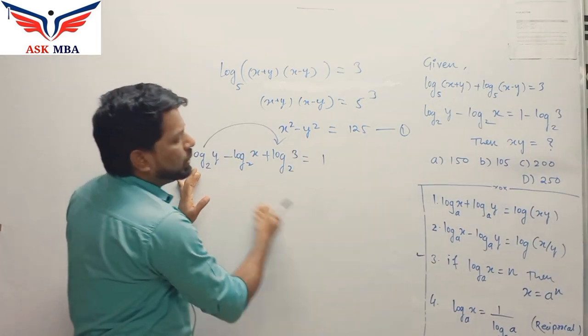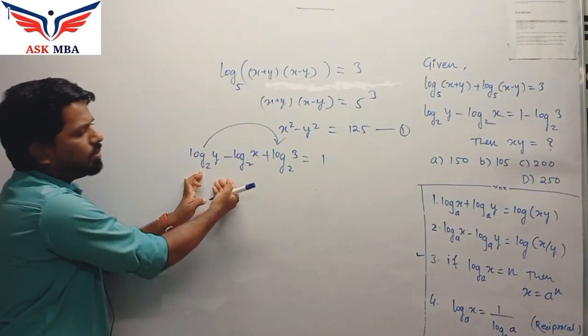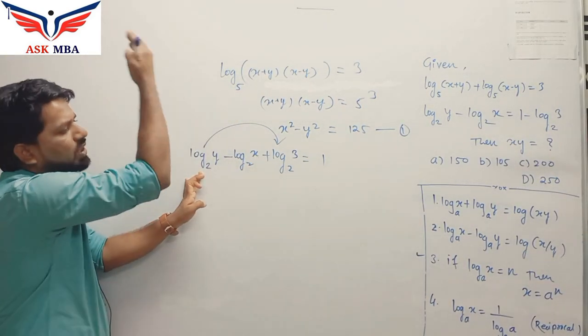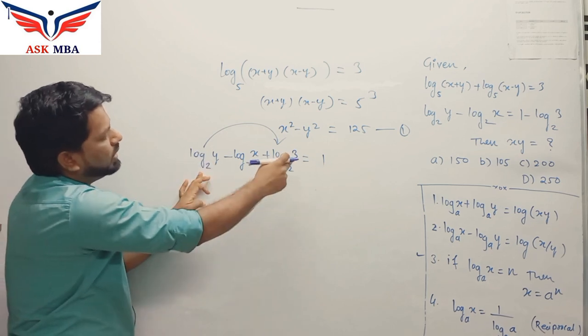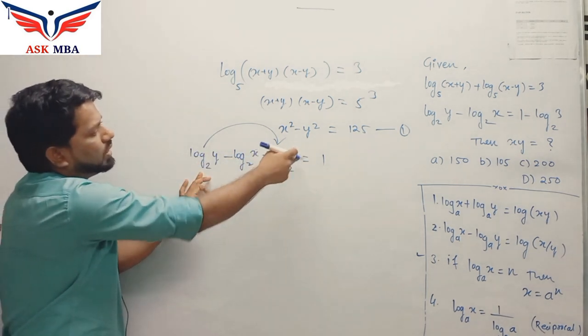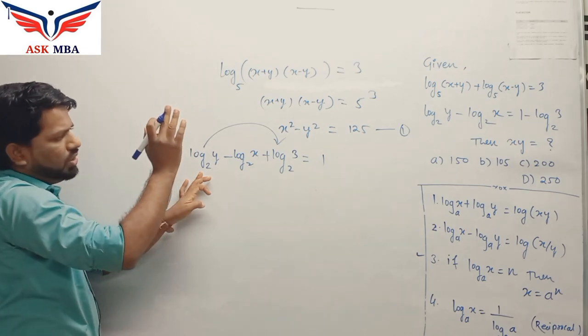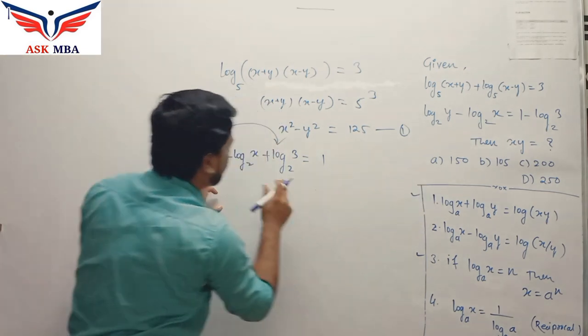Now, after looking at the term, we can clearly use one of the properties again similarly as we have used in the first one. So we can see we have two positive terms, that is log y base 2 and log 3 base 2.